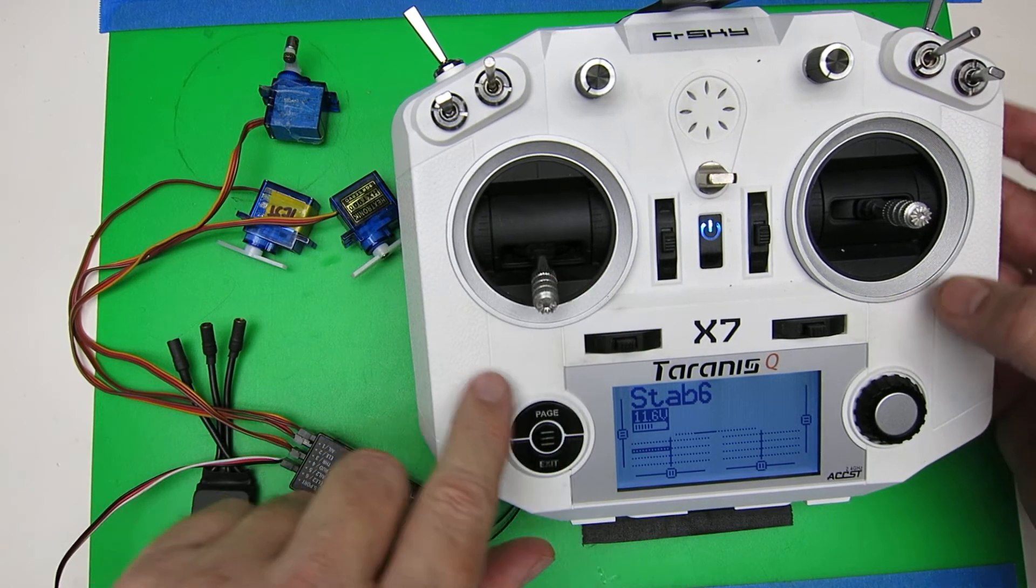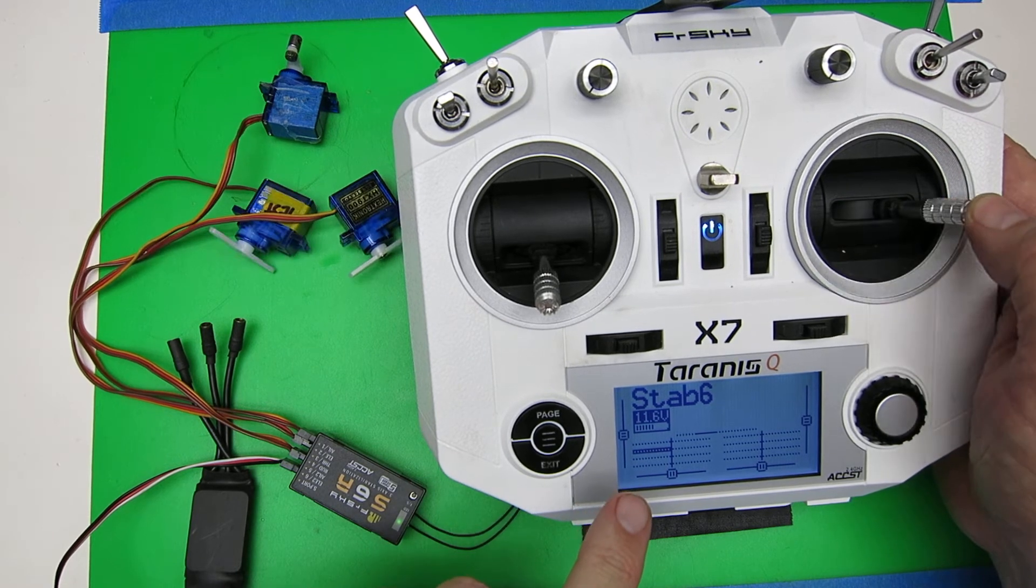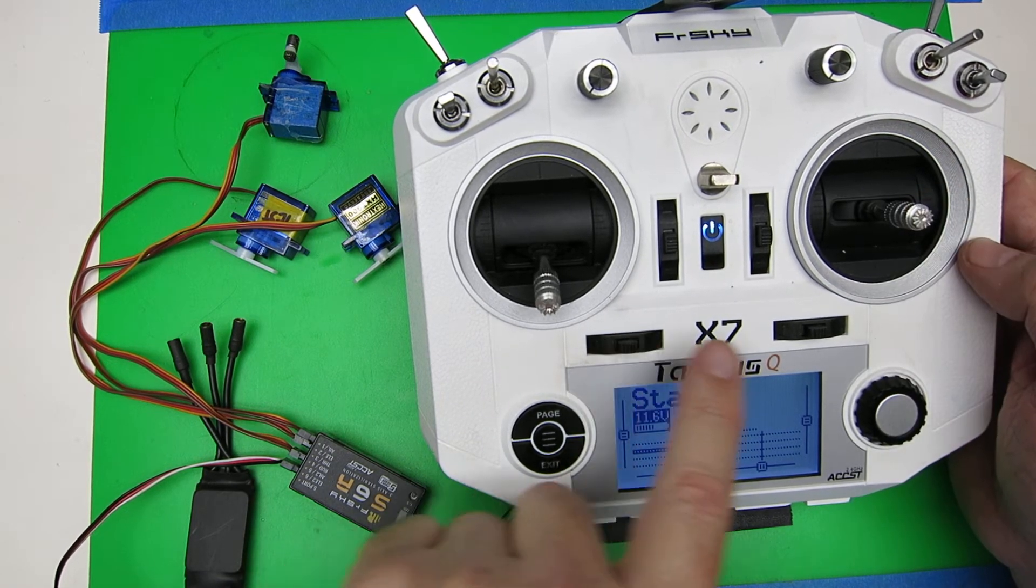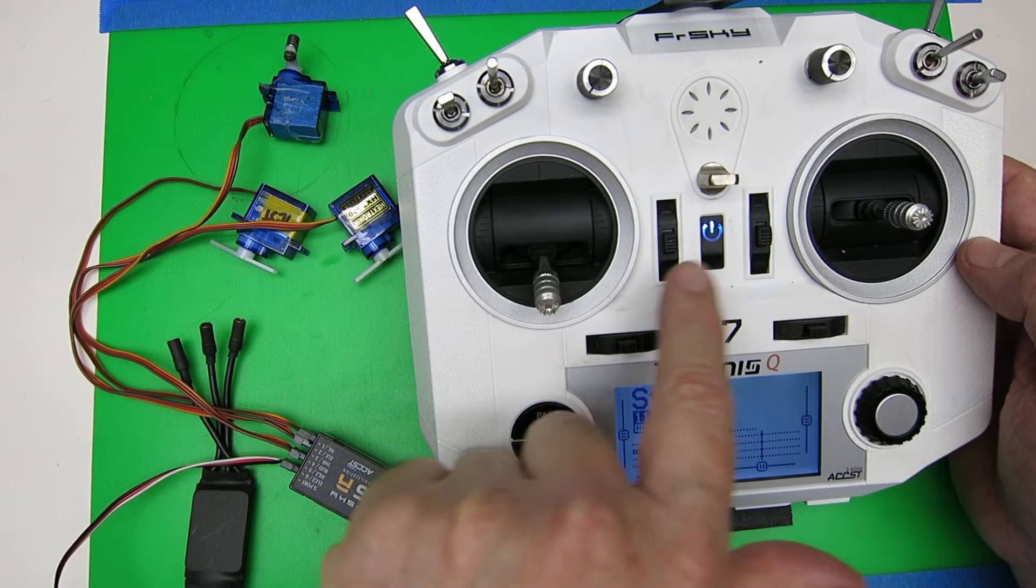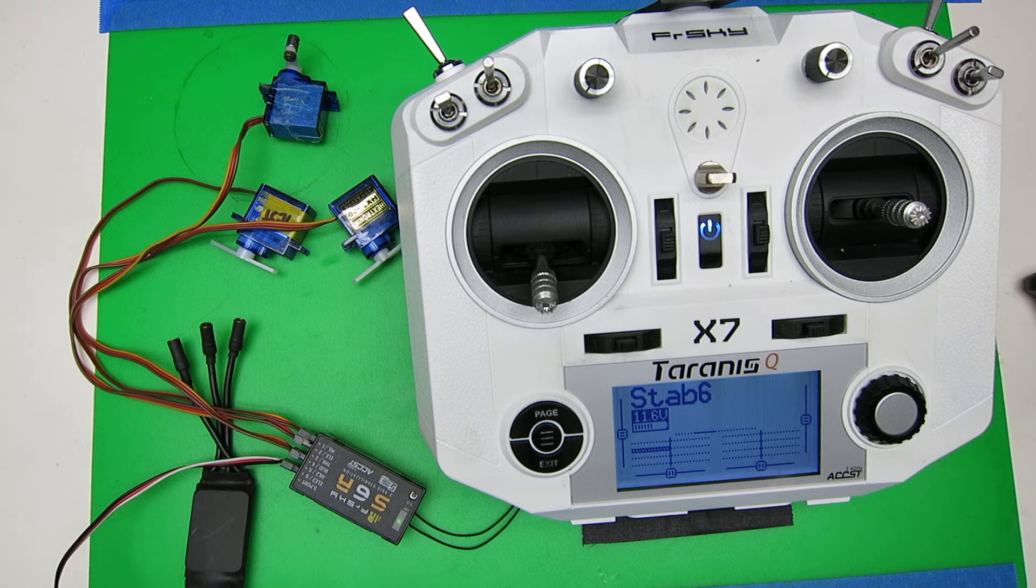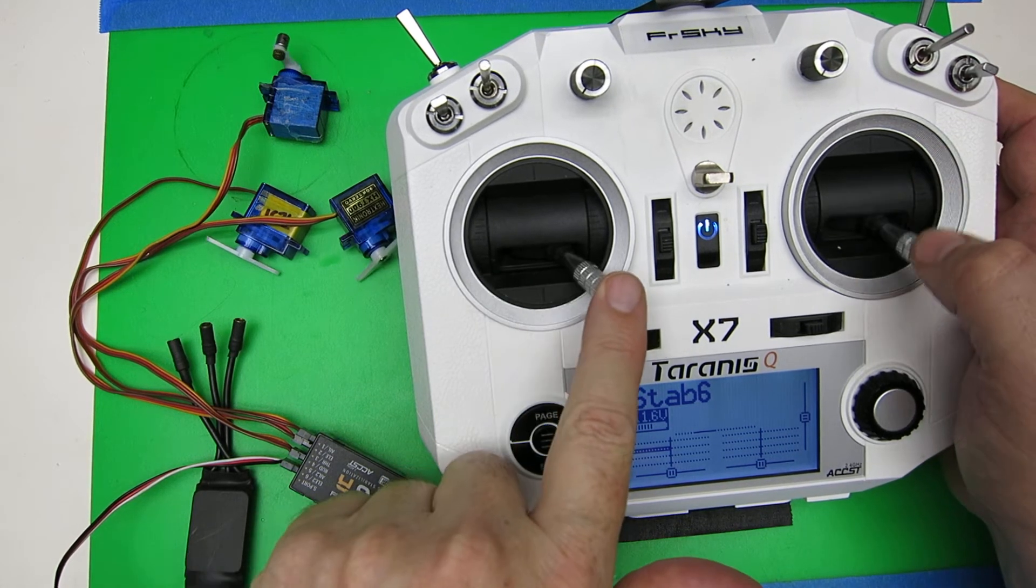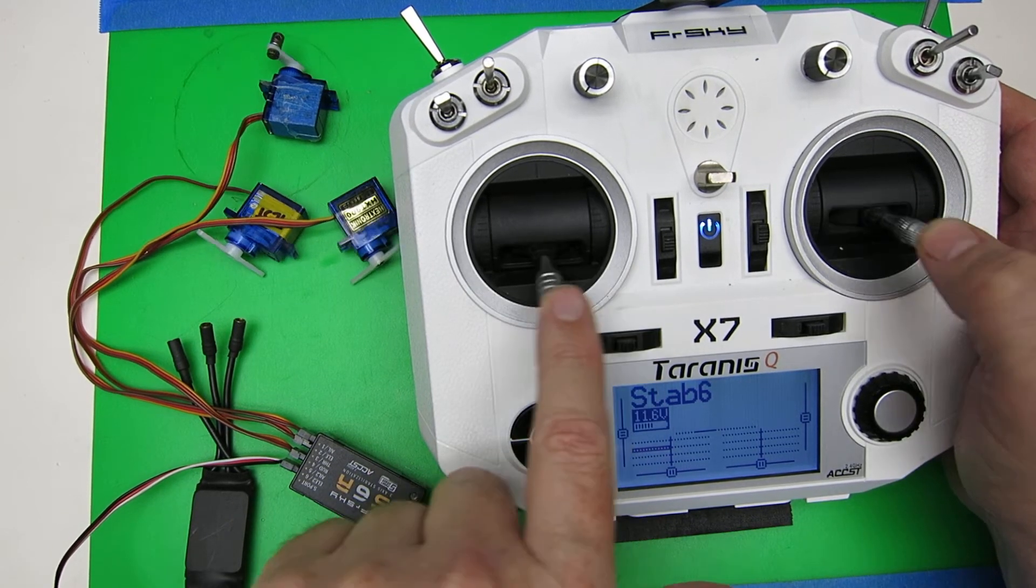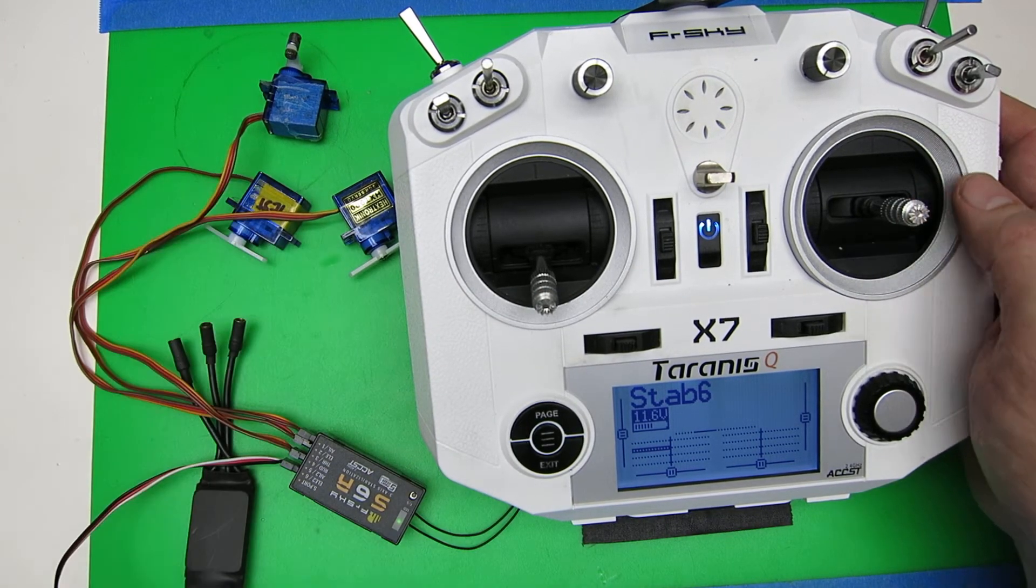Exercise everything except the throttle. Full left, right, full up, down. Make sure that your trims are centered, otherwise you'll have goofed up - it will be offset according to your trim. You can see that is now affecting the servos.